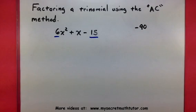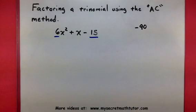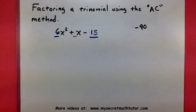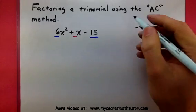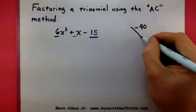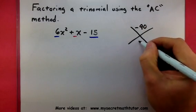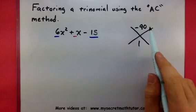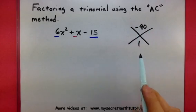Now what I want to do is search for two numbers that multiply to negative 90 but add to my B term — basically the coefficient of the middle term. We're looking for two numbers that multiply to be negative 90 but they add to give us a 1.